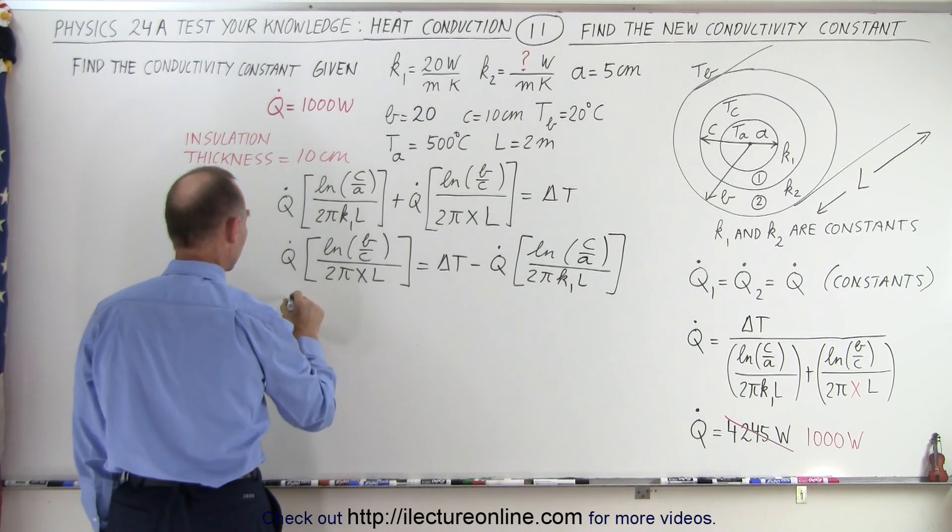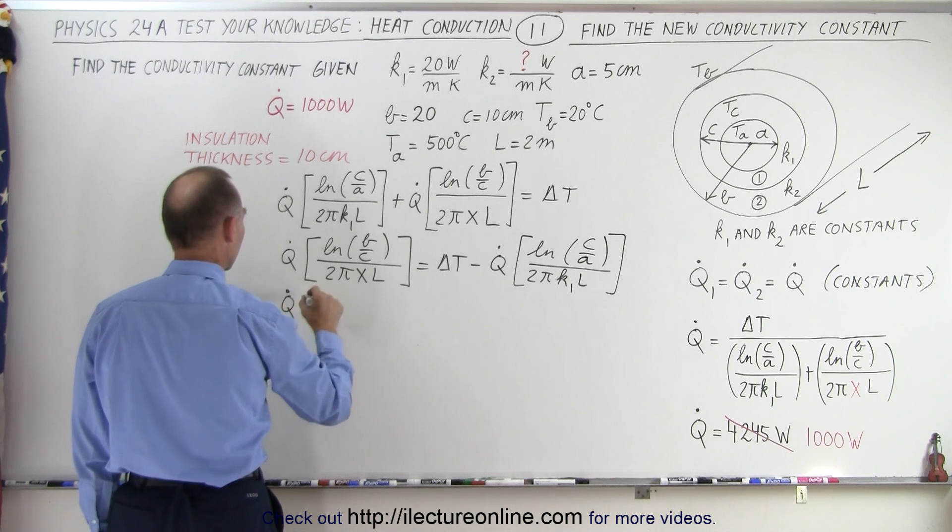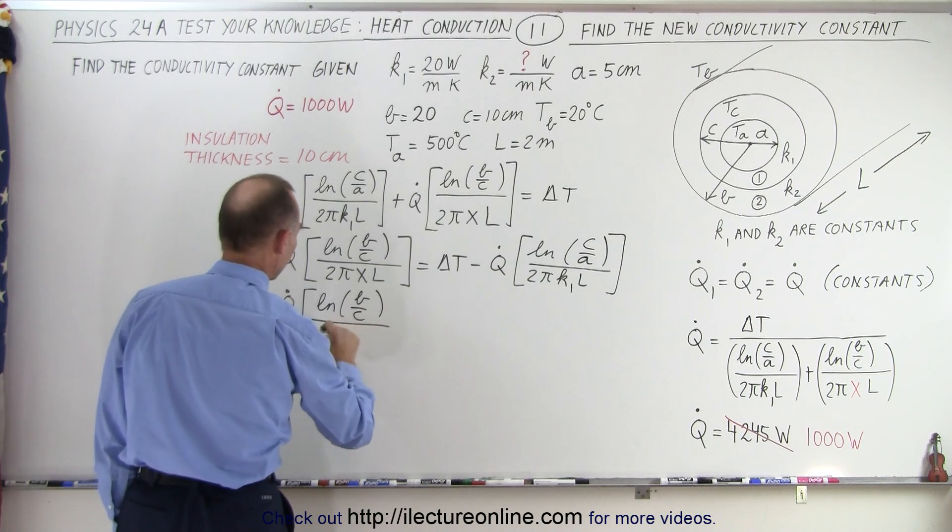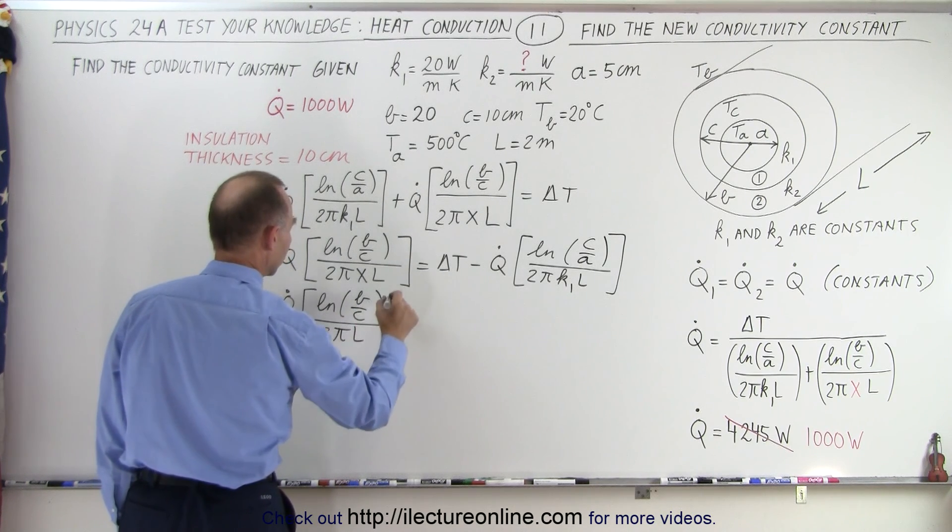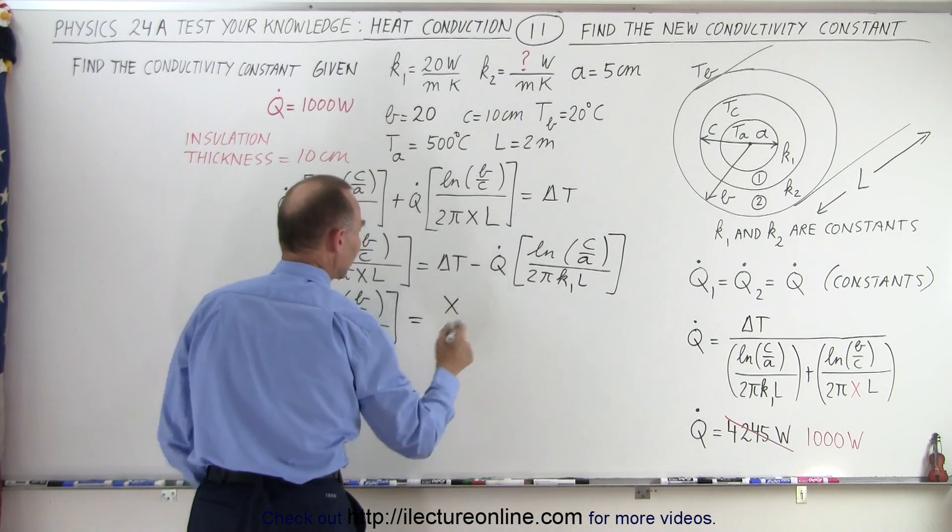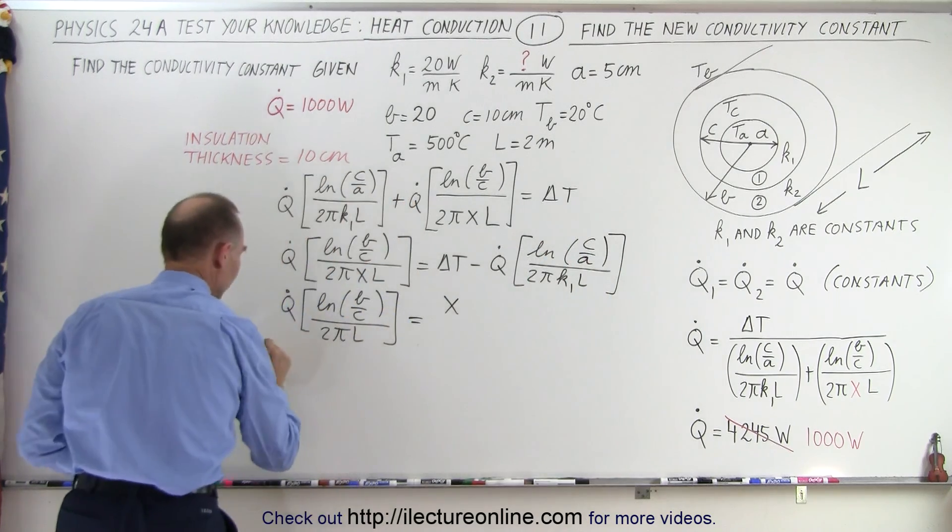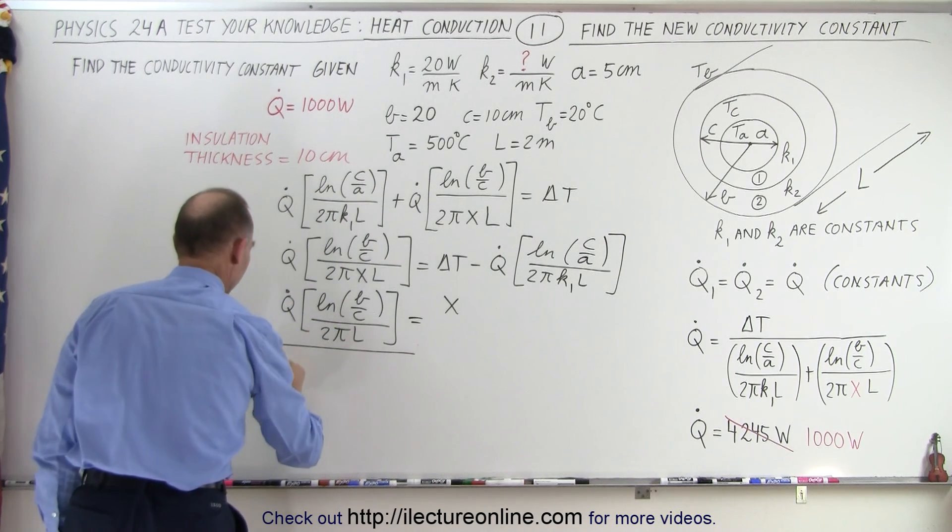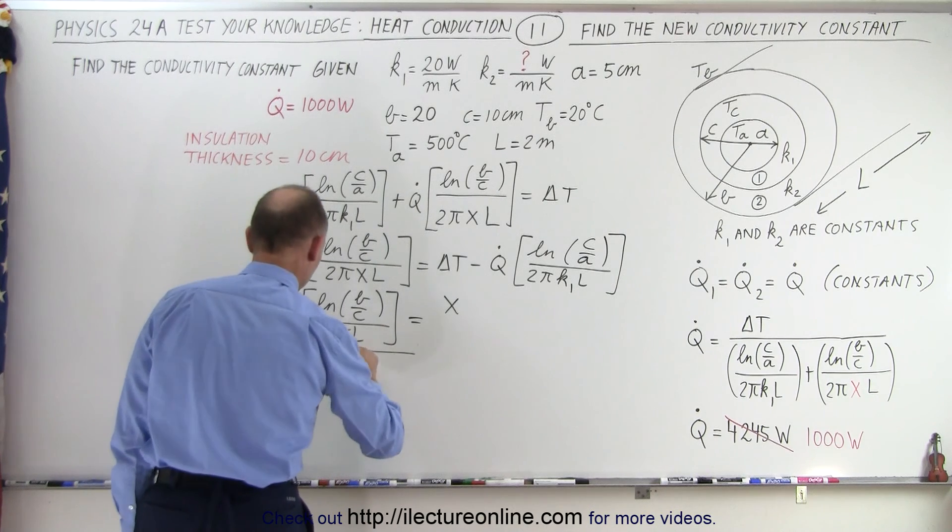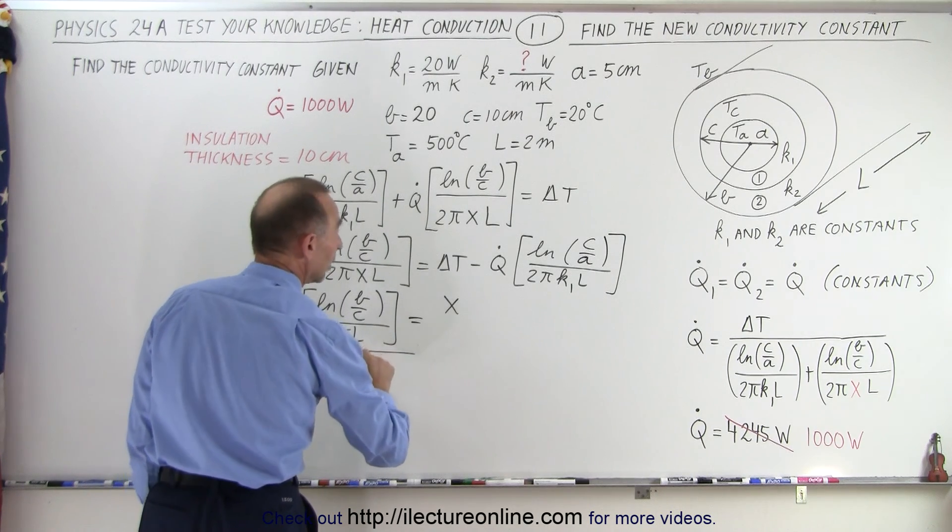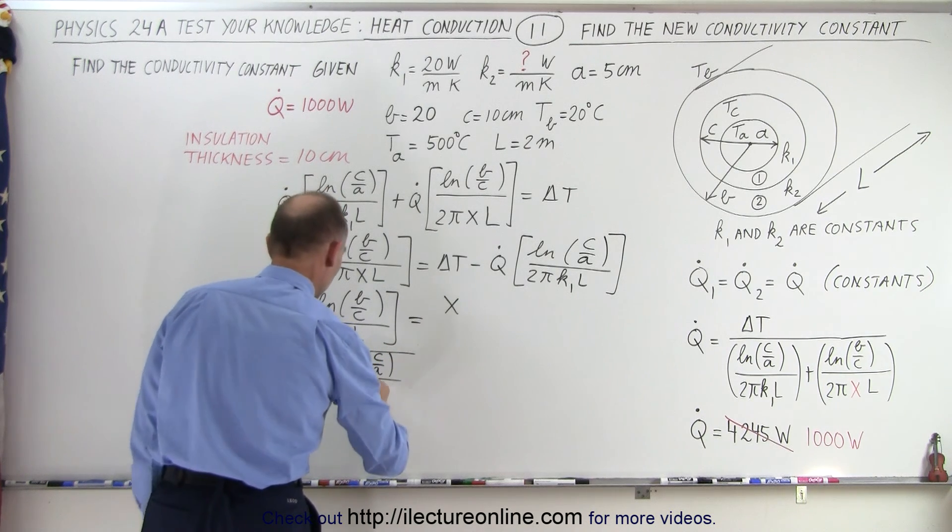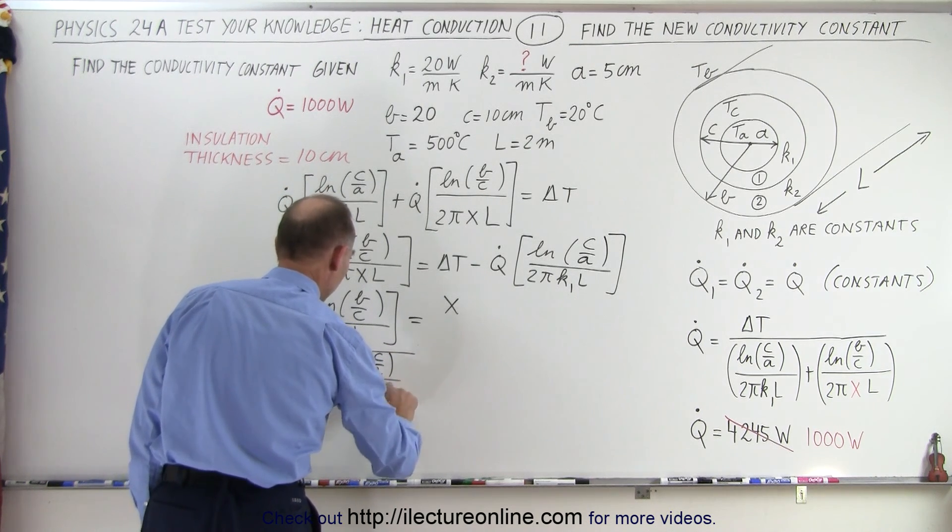So on the left side, we end up with Q dot times the natural log of B over C, divided by 2 pi K1 L. So the X is going to go to the right side, that becomes X, and then everything else comes down here. So divided by delta T minus Q dot times the natural log of C over A divided by 2 pi K1 L.